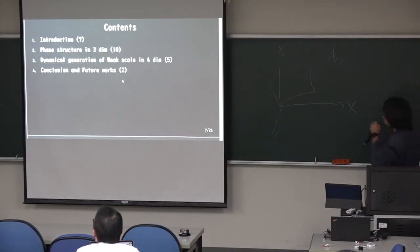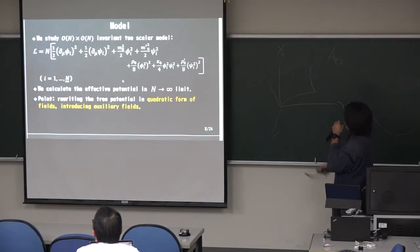And this can be applied for the dynamical generation of weak scales, as Kawai-san said. And these are, we study this model. So standard model, standard model for SNC with two scullers. Maybe phi and upside. Okay. Let's start. Okay. And so let's start, phase structure of the three dimensions.